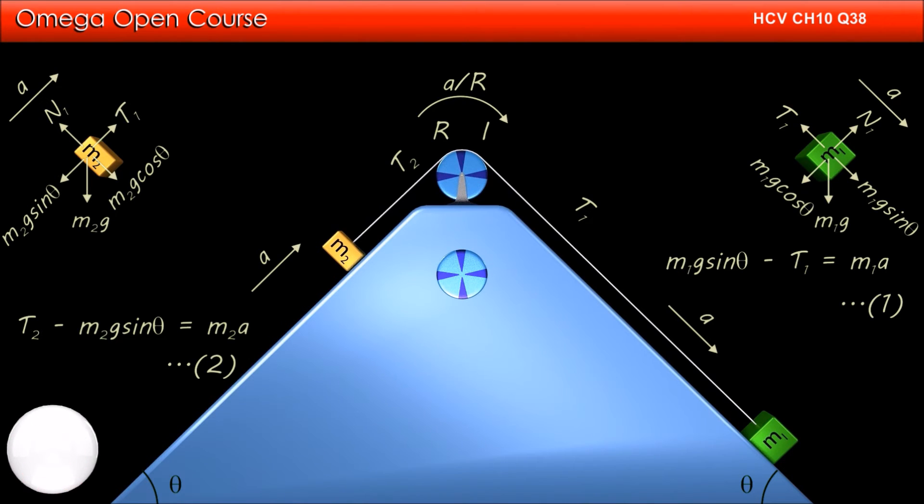Finally let us draw the free body diagram of the pulley. Tension T1 pulls it down the incline on the right while T2 pulls it down the incline on the left. The pulley is rotating in clockwise direction with angular acceleration alpha which is equal to A by R.